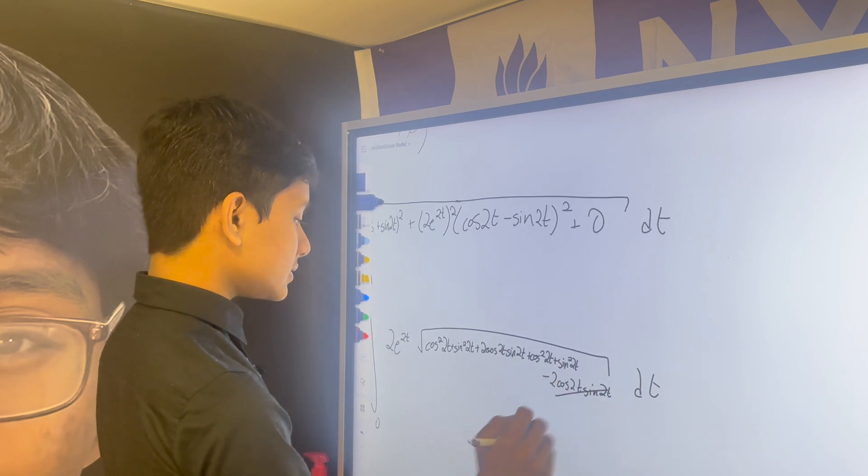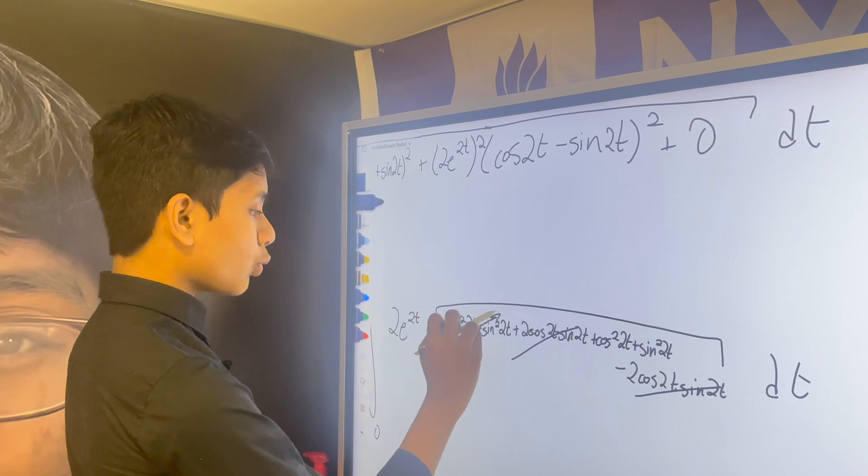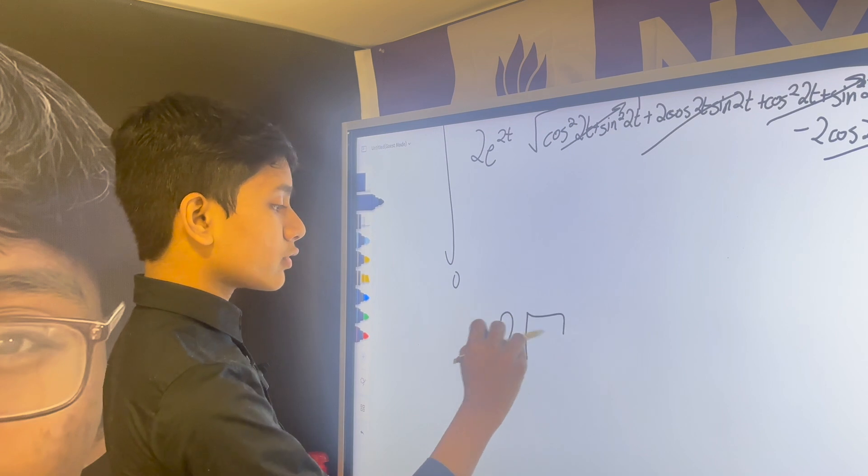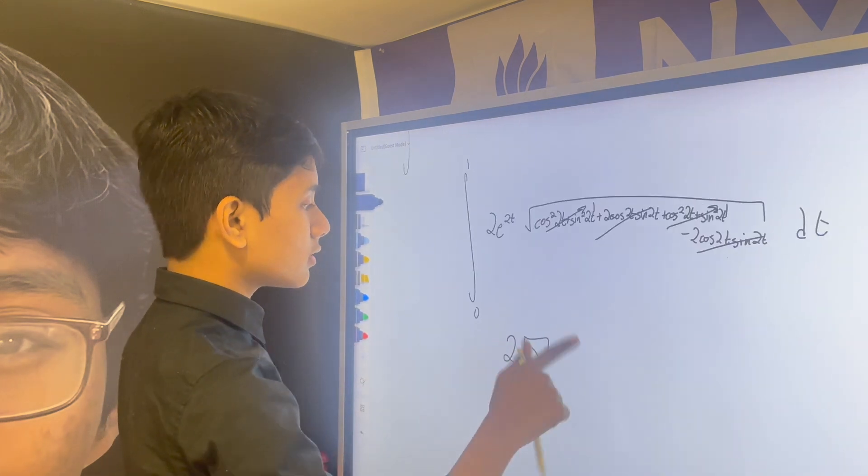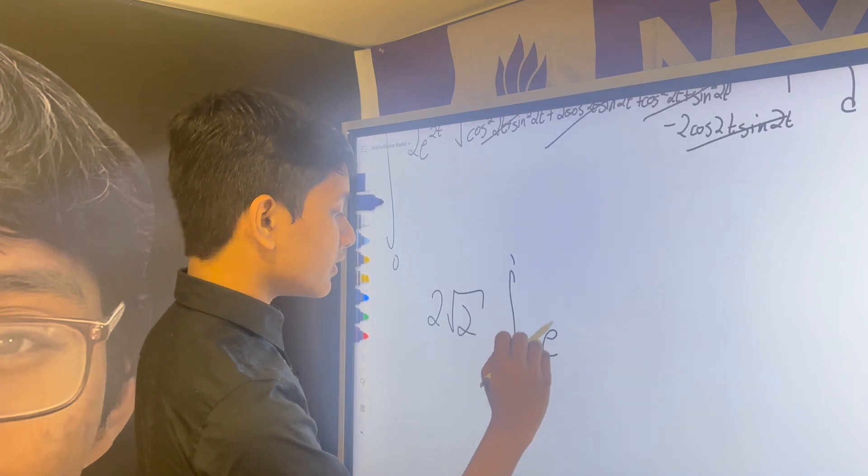So, what does that give us? This cancels out. This cancels out. This goes to 1. This also goes to 1 which means we just have 2 times the square root of 2 from this integral multiplied by the integral from 0 to 1 of e to the 2t